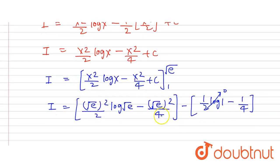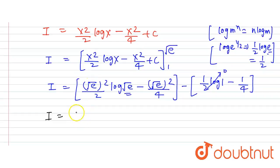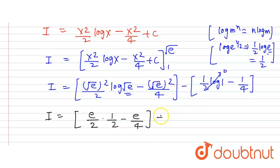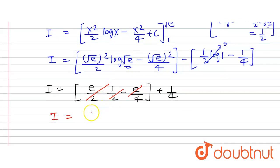We know that log(m^n) = n·log(m), so log(√a) = log(a^(1/2)) = (1/2)·log(a). Since if a = e, log(e^(1/2)) = 1/2. Substituting: I = (a/2)·(1/2) − a/4 − (0 − 1/4) = a/4 − a/4 + 1/4. The terms a/4 cancel, so the final value of I = 1/4.